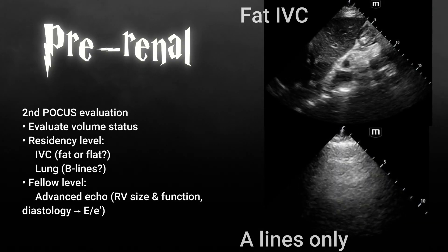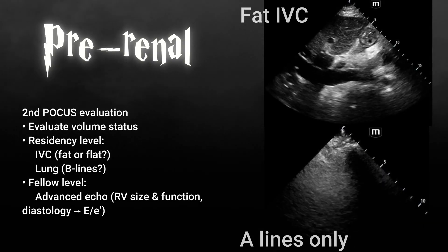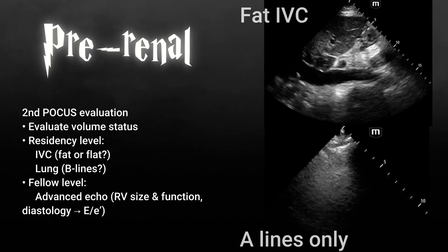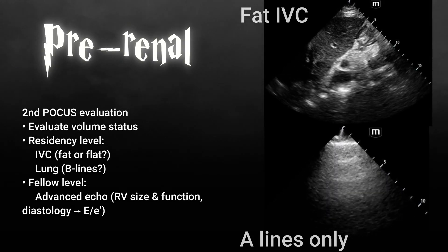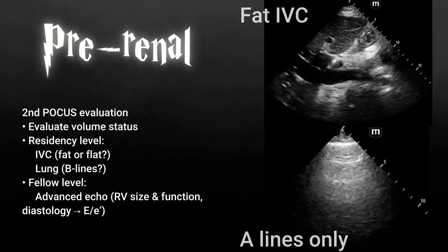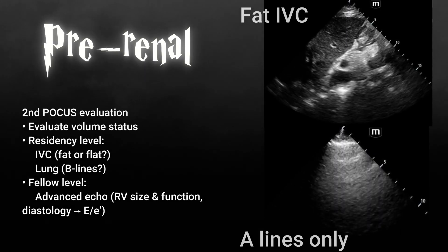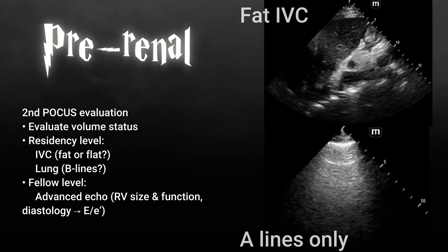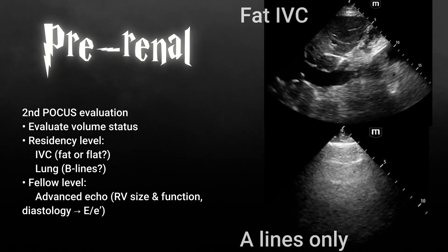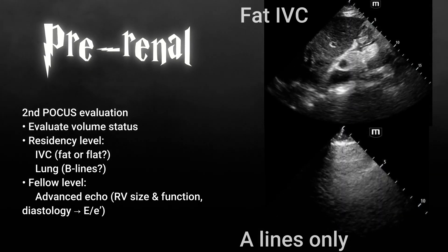If you wanted to move on to the fellow level volume status assessment, this usually entails advanced echo — we're going to be discussing RV size and function. However, you can evaluate for diastology, but that will be saved for another lecture.